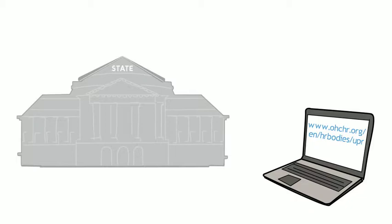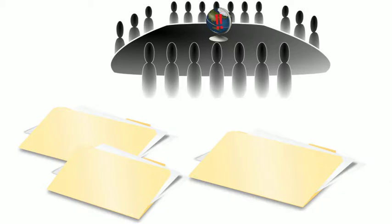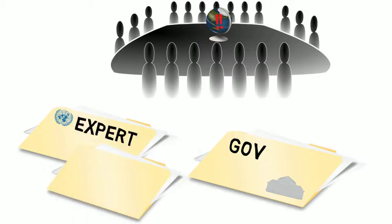There are four stages to the UPR process. Firstly, three reports are prepared and submitted to the Human Rights Council: one from the government being reviewed, one summarising input from UN experts, and one summarising input from civil society and national human rights institutions.